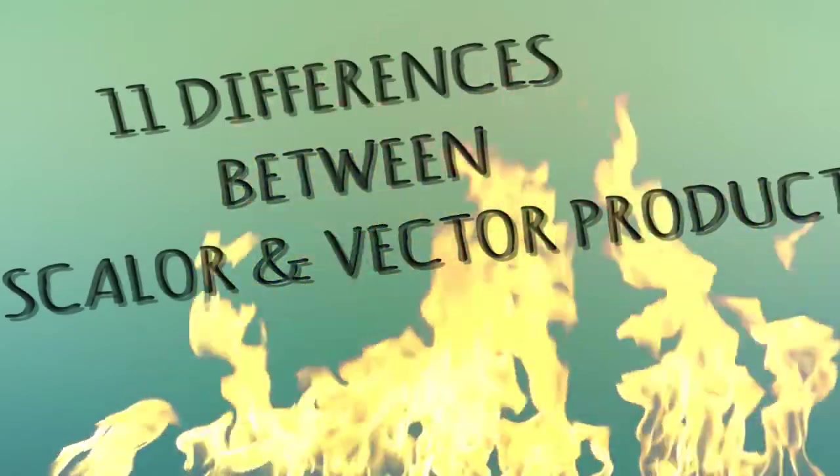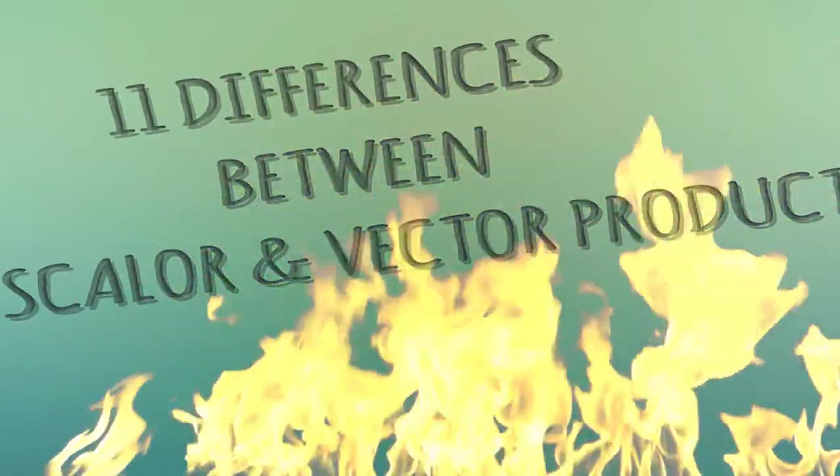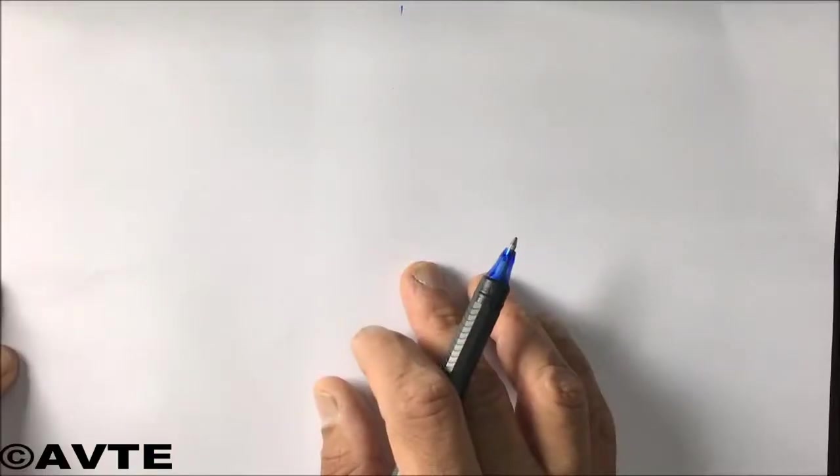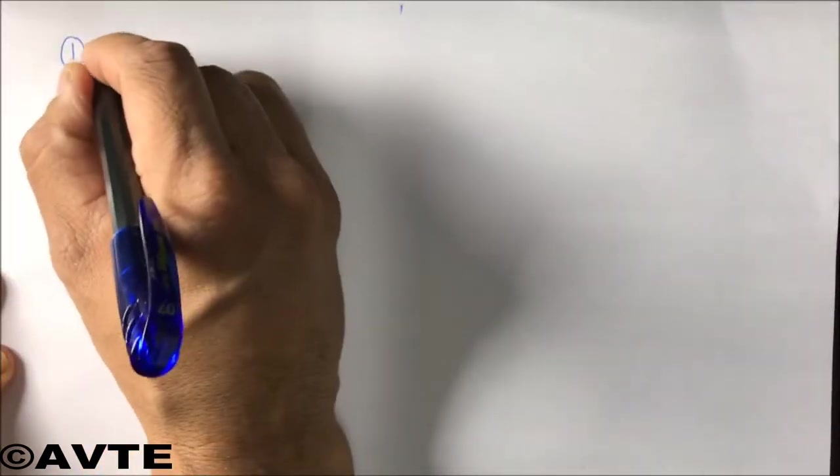Hello students, today we'll be understanding the major differences between the scalar product and the vector product of two vectors. You all know that whenever we take a product of two vectors, either it is a scalar product or it is a vector product. So on one side I'm writing scalar product.